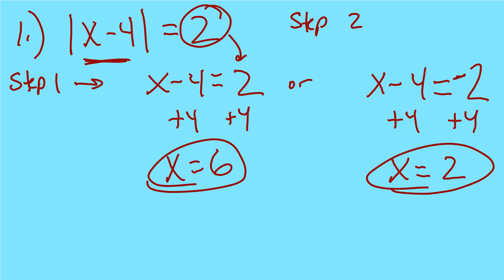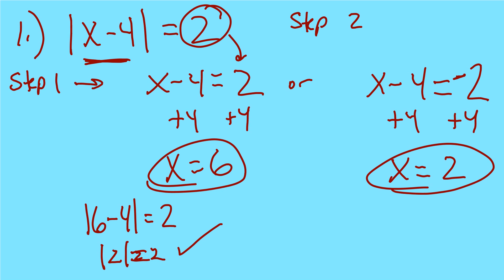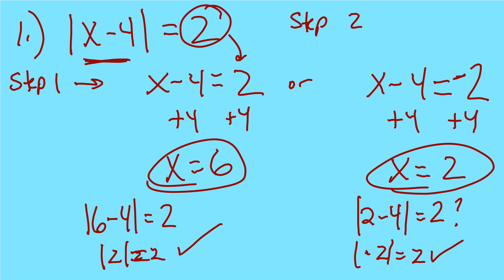To check, I plug in. The absolute value of 6 minus 4 — is that equal to 2? 6 minus 4 is 2, and the absolute value of 2 equals 2, so that checks. Then 2 minus 4 is negative 2, and the absolute value of negative 2 is 2, so we're good to go.